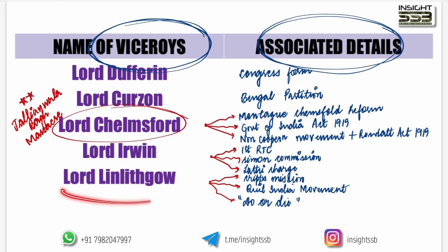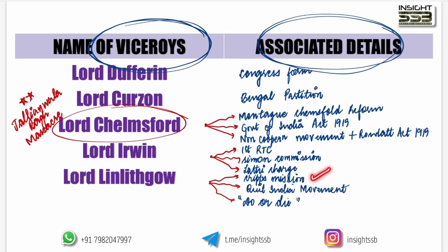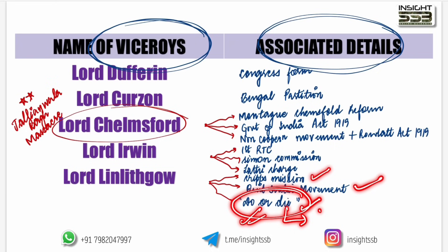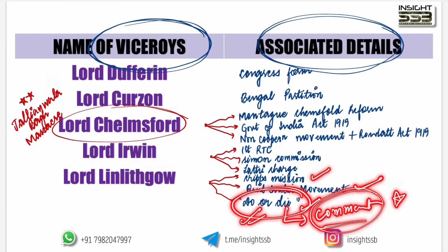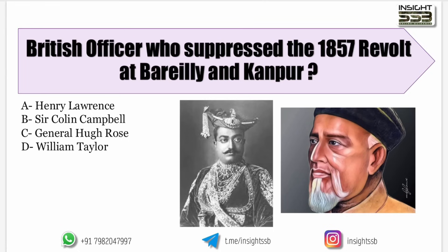Lord Linlithgow's time saw the Cripps Mission and the Quit India Movement — also known as Do or Die. The 'Do or Die' slogan was given during this period.